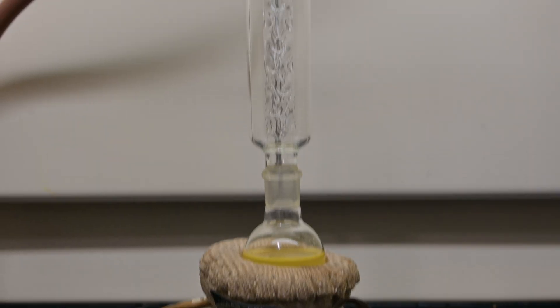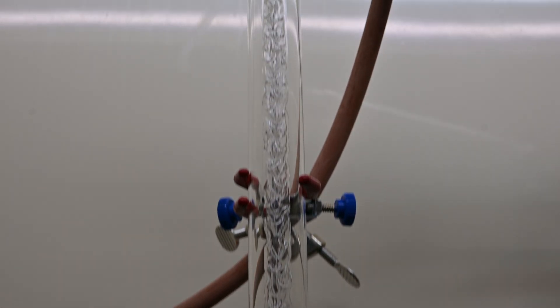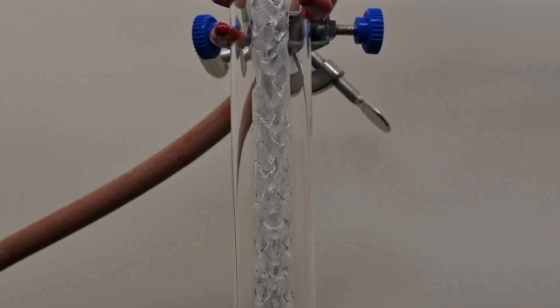The fractional distillation setup is quite similar to that of regular distillation, with a key difference being the inclusion of a fractional column. There are many types of fractional columns, such as bubbler plates, packed columns, etc. Today we'll use a Vigreux column.